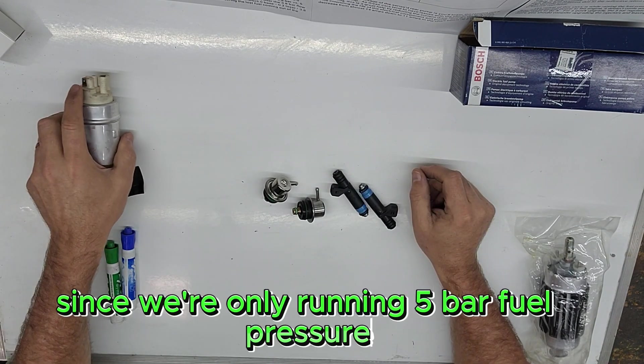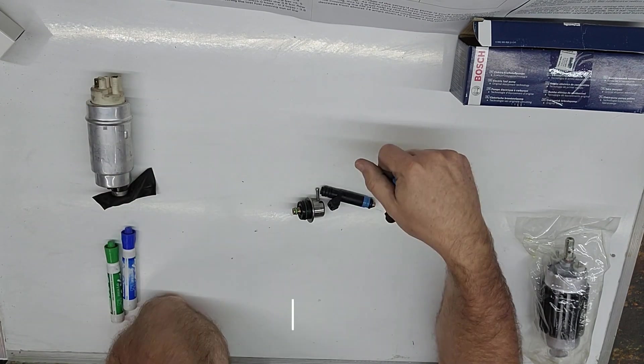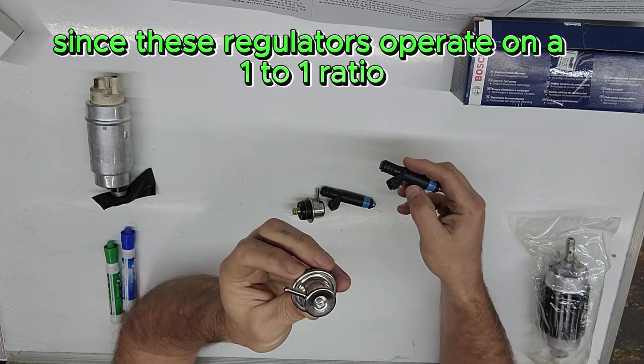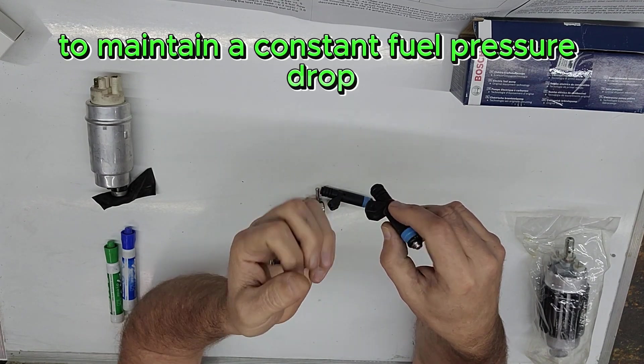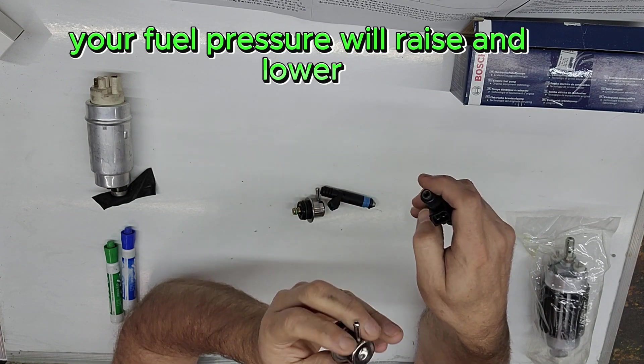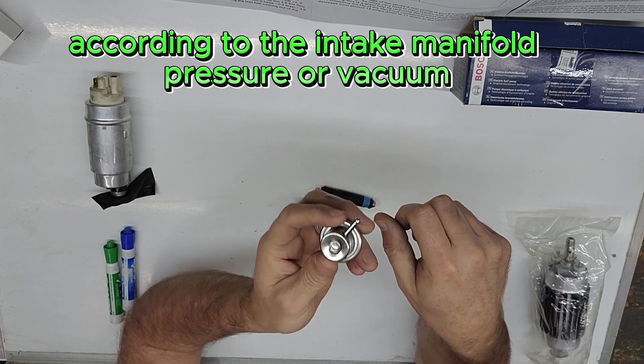That's fine, you say, since we're only running 5 bar of fuel pressure, right? Well, no. Since these regulators operate on a 1 to 1 ratio with fuel pressure to maintain a constant fuel pressure drop across the fuel injectors, your fuel pressure will raise and lower according to the intake manifold pressure or vacuum.